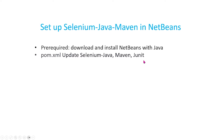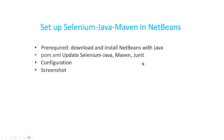Next, we're going to show you how we can update our pom.xml file so that we have all the dependencies that we need — for instance, Selenium Java, Maven, JUnit, and so on. We'll also show you how to configure our project with different packages and classes, how to create a class to take screenshots, how to implement extent reports, and how to use Grid, Docker, and so on.